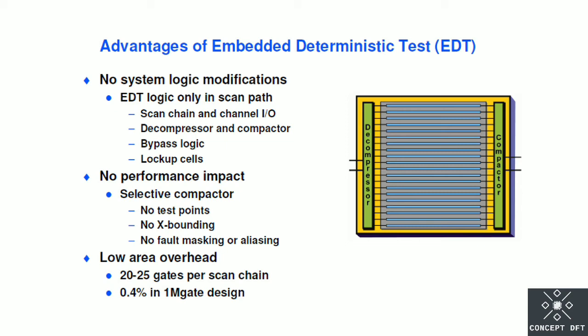Further advantages include: no system logic modification, since EDT logic is external, there is no logical modification in the ATPG netlist. Another advantage is no performance impact. The last advantage is low area overhead — only approximately 0.4 percent increase per one million gates. These are all the advantages of embedded deterministic test, and they can also be considered in the context of disadvantages.